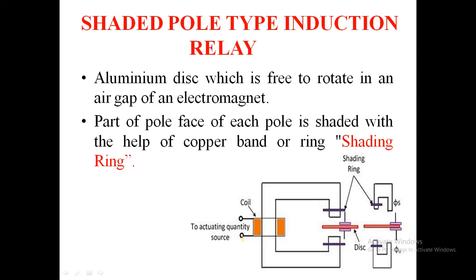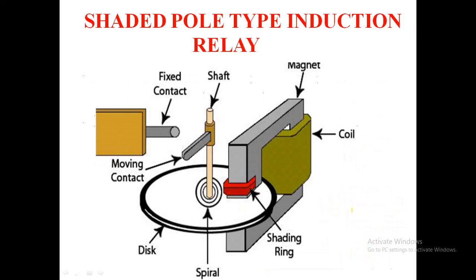The next type is the shaded pole type induction relay. In this relay, an aluminium disk is free to rotate in an air gap of an electromagnet. Here is the coil representation, the rotating disk, and the shading ring. A portion of each pole is shaded with the help of a copper band called a shading ring. The diagram shows the fixed contact, moving contact, disk, spiral, shading ring, copper band, coil, and magnet.